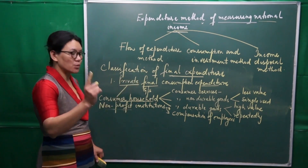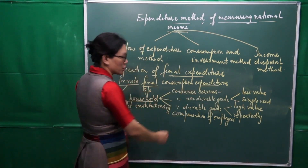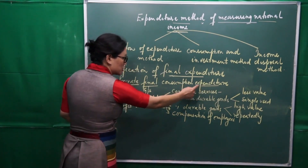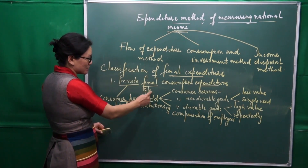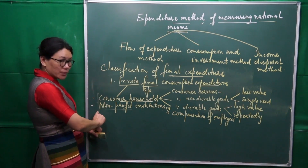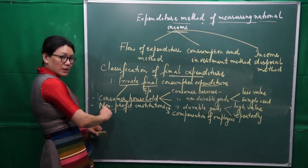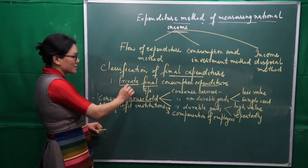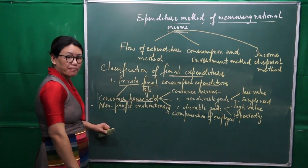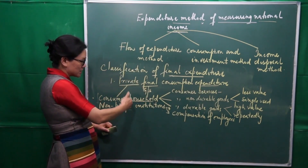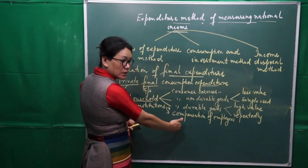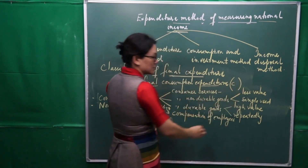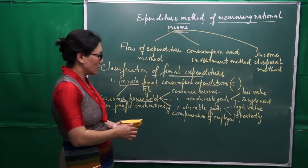To summarize: the first classification of final expenditure is Private Final Consumption Expenditure — that is, expenditure on the purchase of final goods and services by consumer households and non-profit institutions during an accounting year. This Private Final Consumption Expenditure is denoted by C.